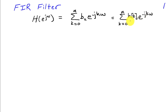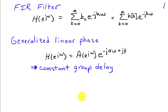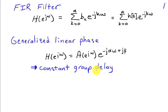We'll be using the H of k form in the rest of the lecture. Linear phase, in a generalized sense, is defined as a frequency response that can be expressed as a real function A of e to the j omega — A can be positive or negative, but it's real — times a phase factor that's a linear function of omega plus a constant beta. This definition of general linear phase results in a system that has a constant group delay, which in this case would be alpha, the same for all frequencies.